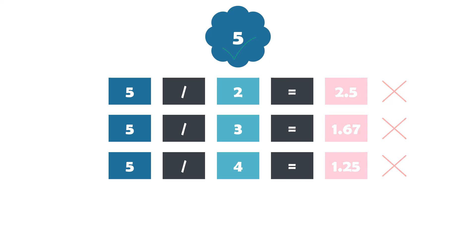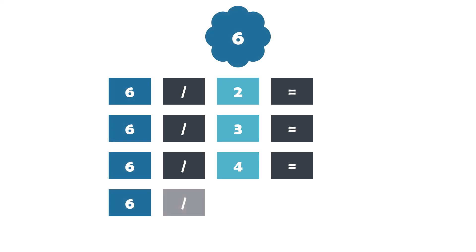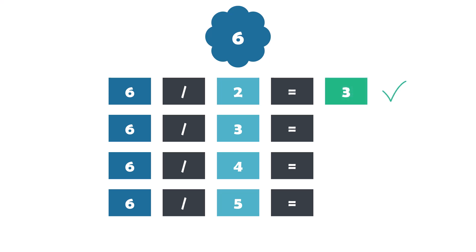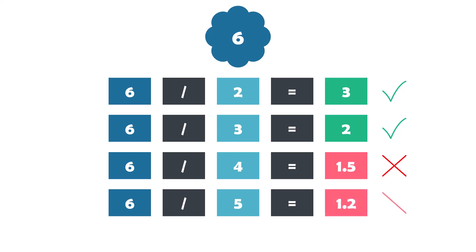Let's now check another number, for example 6. We have to divide it by numbers from 2 to 5. Dividing by 2 returns 3 — so 6 can be divided evenly by 2. Dividing by 3 returns 2 — so 6 can also be divided evenly by 3. Dividing by 4 returns 1.5, so 6 cannot be divided evenly by 4. The same also for number 5. As you can see, we can divide 6 evenly by numbers other than 1 and itself, which means number 6 is not a prime number.